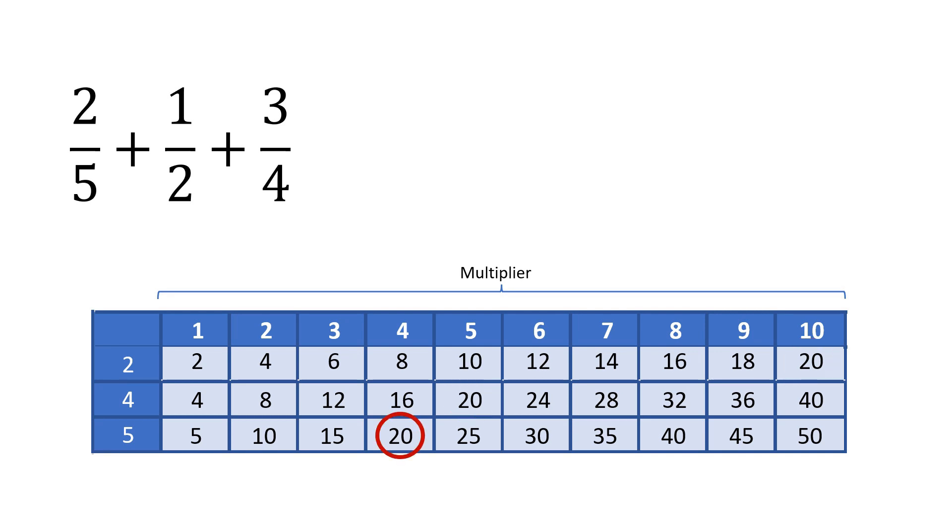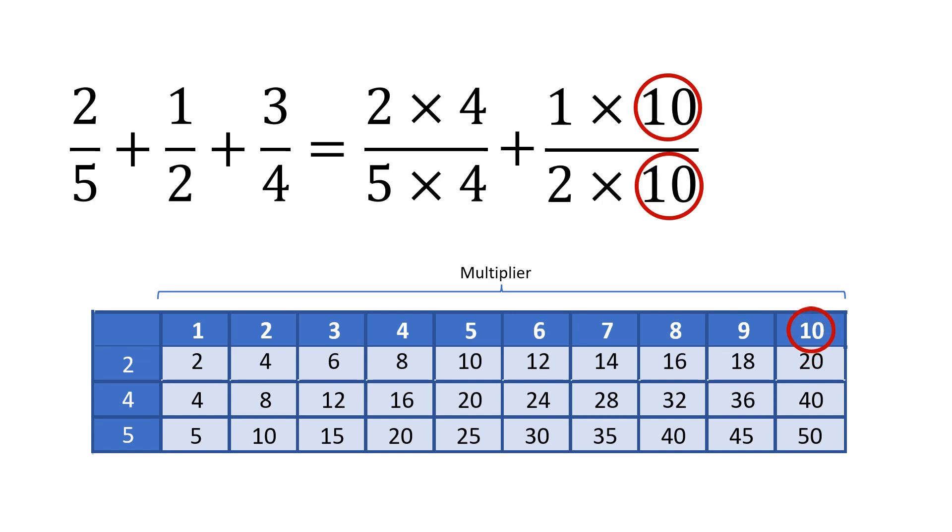So we have to multiply 2 fifths by 4, 1 second by 10, and 3 fourths by 5.